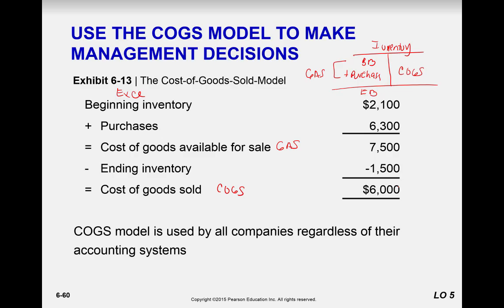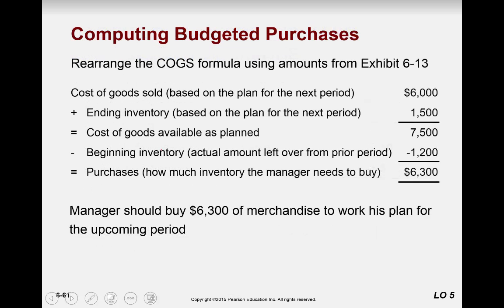Cost of goods sold is used by all companies regardless of system — whether perpetual or periodic, you need to display your cost of goods sold. We can also rearrange the formula: cost of goods sold plus ending inventory equals goods available for sale, minus beginning inventory tells us how much we need to purchase for the upcoming period. This makes it a useful forecasting tool.